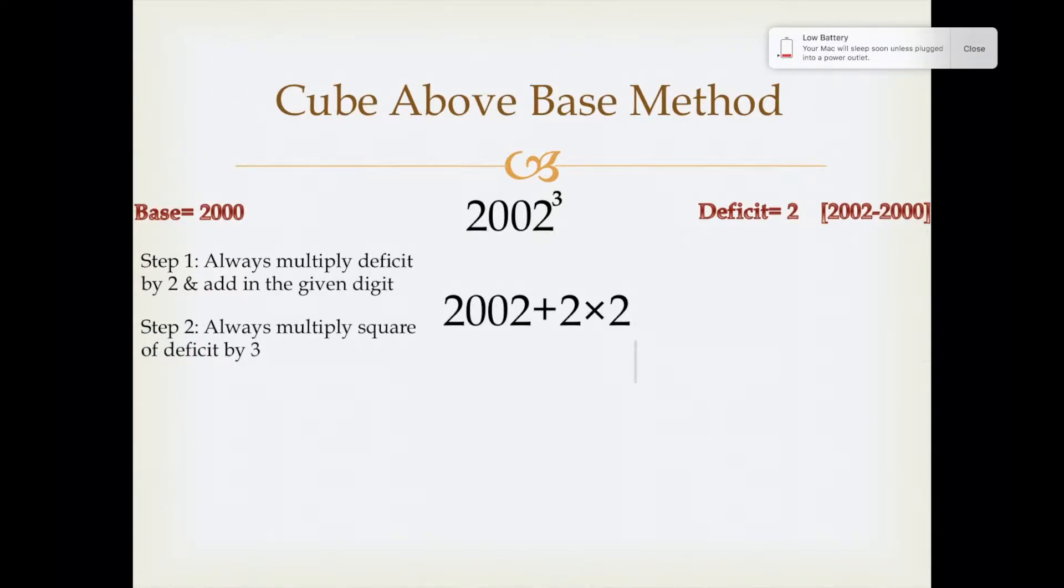Now next step, we will multiply deficit square by 3. Deficit is 2, so 2 square multiply by 3. The last step is we will write the cube of the deficit, 2 cube because 2 is the deficit.